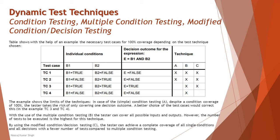This example shows the limits of the techniques. With condition testing, technique A, despite 100% condition coverage, the tester risks covering only some decision outcomes. A better choice of test cases, such as TC3 and TC4, would be more effective — this is where multiple condition testing, technique B, comes in, allowing the tester to cover all possible inputs and outputs. However, the number of tests to be executed is the highest for technique B.